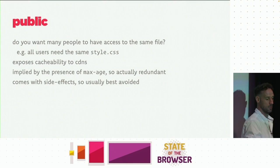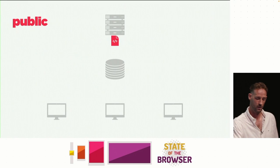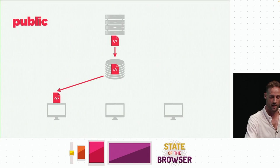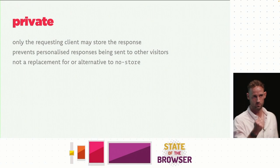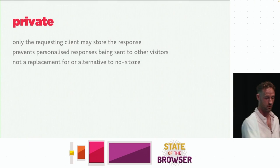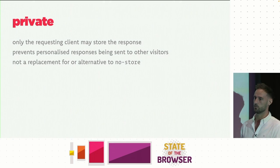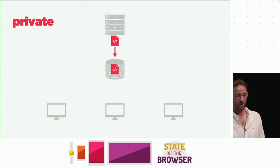If the file can't be shared — if it's unique to one particular person, if someone's logged in and the HTML contains their name, account details, maybe bank account balance — you complement it with the 'private' directive. Private means only the requesting client may store this response. It prevents personalized or sensitive information going out to multiple endpoints or users. It's not a security mechanism and it's not a suitable replacement for no-store — it just means the file passes through your CDN without leaving a copy there.